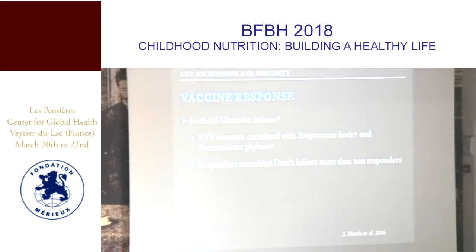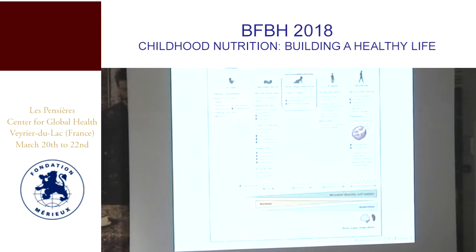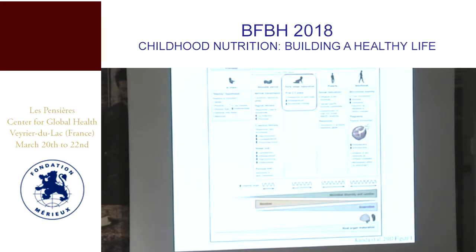Stepping back to look at how the gut microbiome develops over the lifespan: as our methods for detecting microorganisms have improved, many sterility hypotheses have gone out the window. It was thought that the in utero environment is sterile — we no longer think that. There is plenty of microbiota in the placenta, amniotic fluid, semen, and so on. In the neonatal period, major factors determining microbiota composition are whether it's a vaginal delivery or cesarean section.